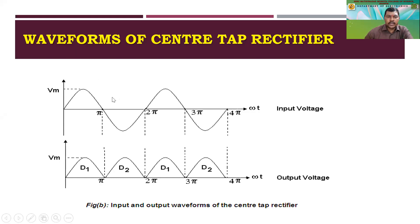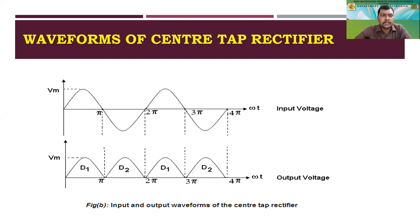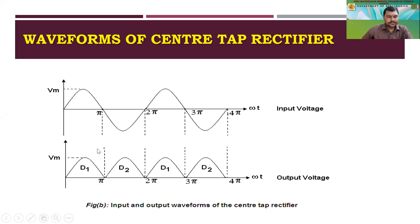If you apply this voltage to the full wave center tap rectifier circuit, we expect to get pulsating DC output pulses — it is not pure DC. During the positive region D1 conducts, and during the next half D2 conducts alternately. One diode remains in forward bias for each half cycle, so the full wave is rectified. The amplitude is represented as Vm, the maximum amplitude of the applied voltage.